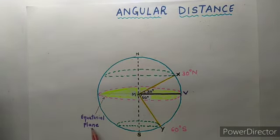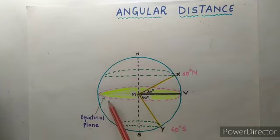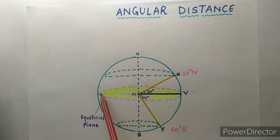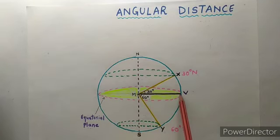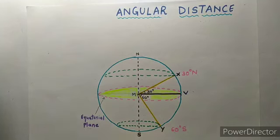Next is the equatorial plane. The area around the equator is called the equatorial plane. This line here is the equator, and therefore the area which comes around the equator is called the equatorial plane.